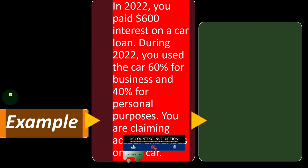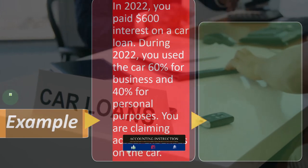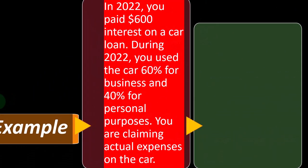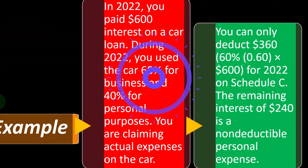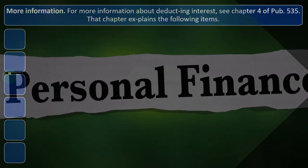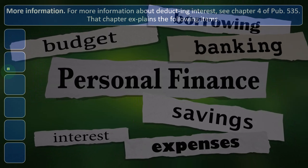For example: in 2022 you paid $600 interest on a car loan. During 2022 you used the car 60% for business and 40% for personal use. Because you are claiming actual expenses on the car rather than the standard mileage rate, you can only deduct $360 — which is 60% of $600 — on Schedule C for 2022. The remaining $240 is non-deductible personal expense.